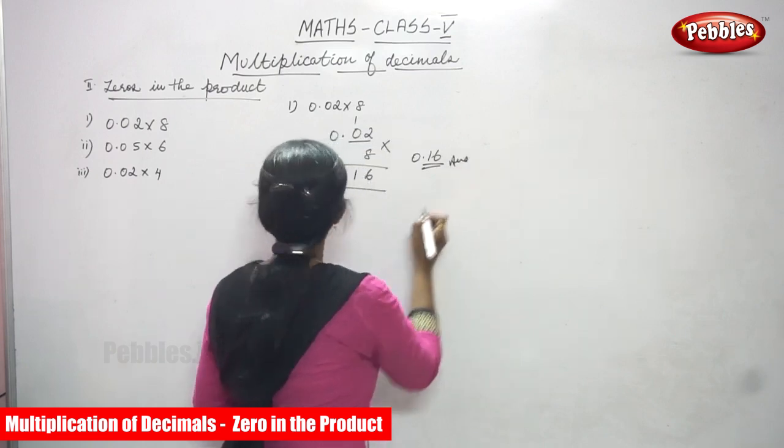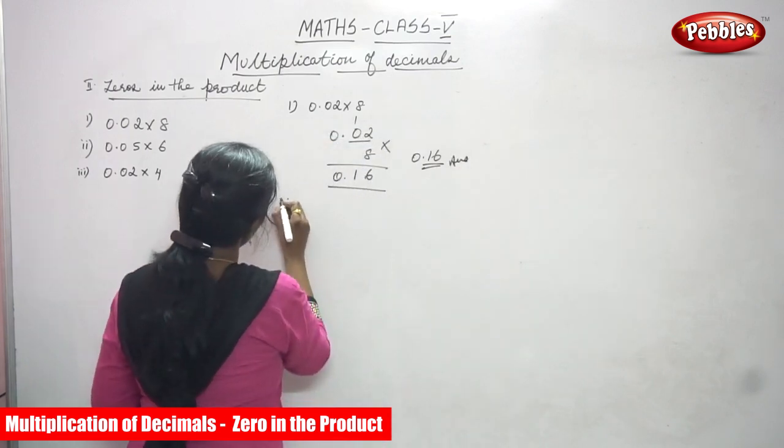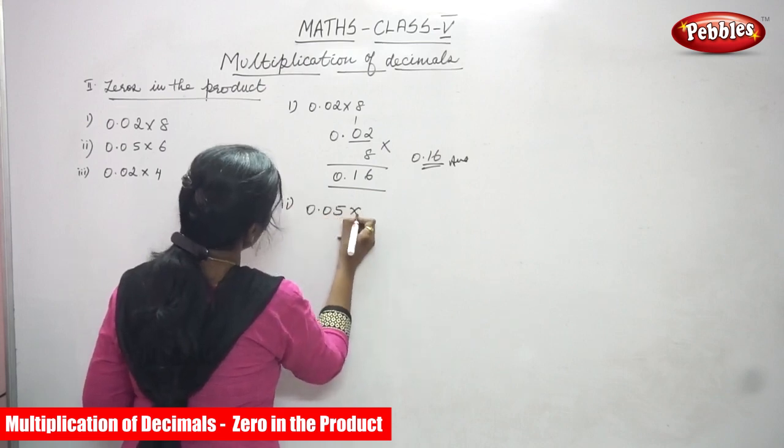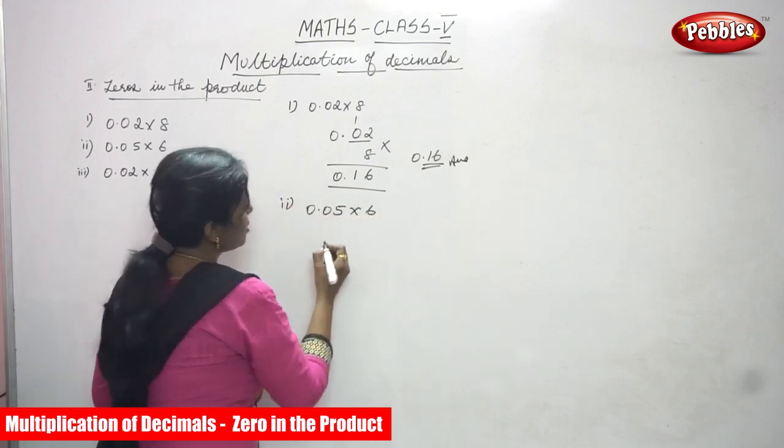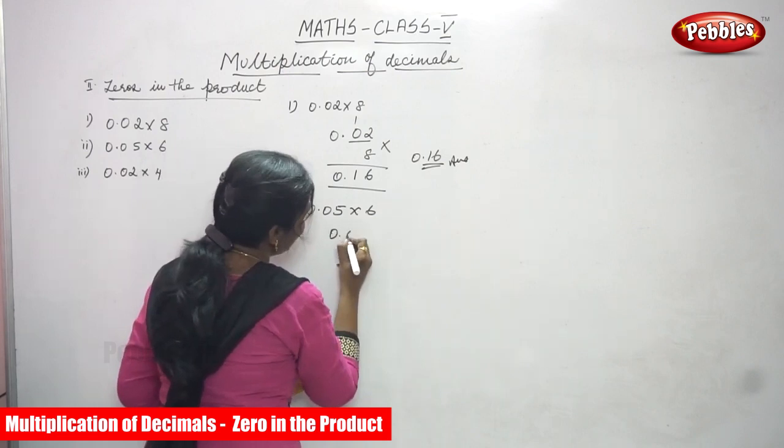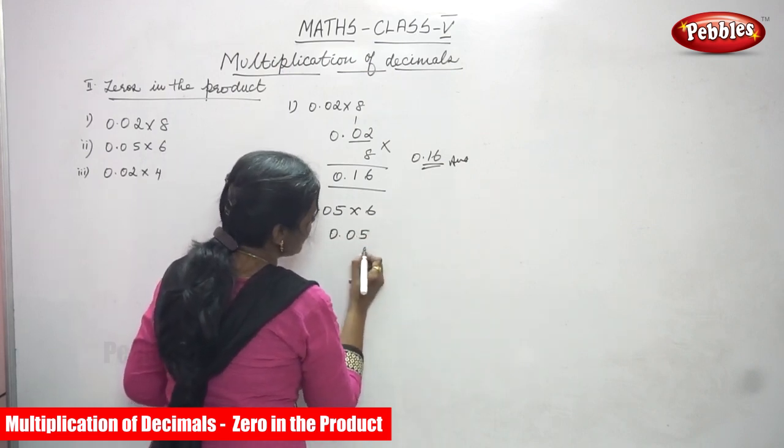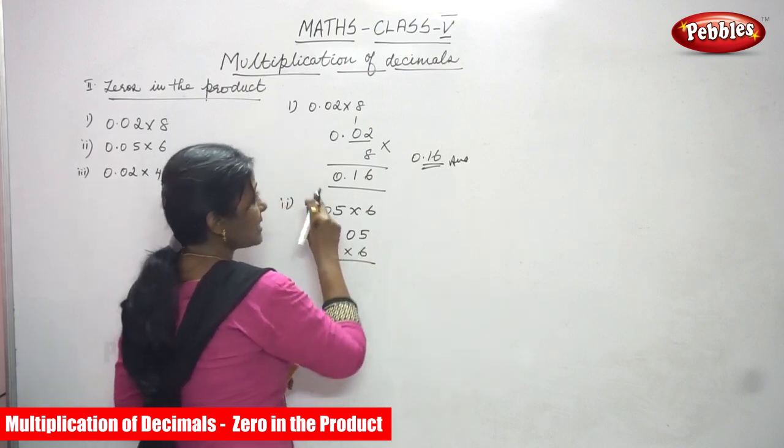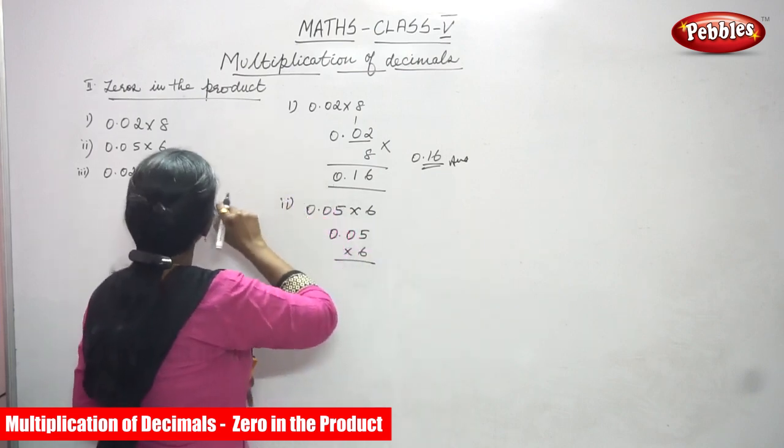Next one. Next sum, second sum. We start with second sum. 0.05 into 6. So 0.05 into 6. So start with this because 0 in the product.